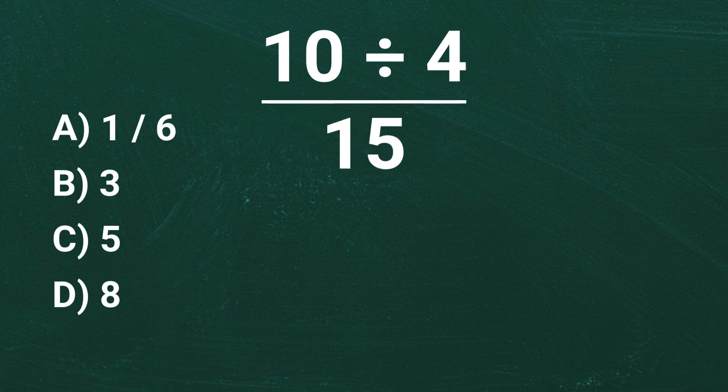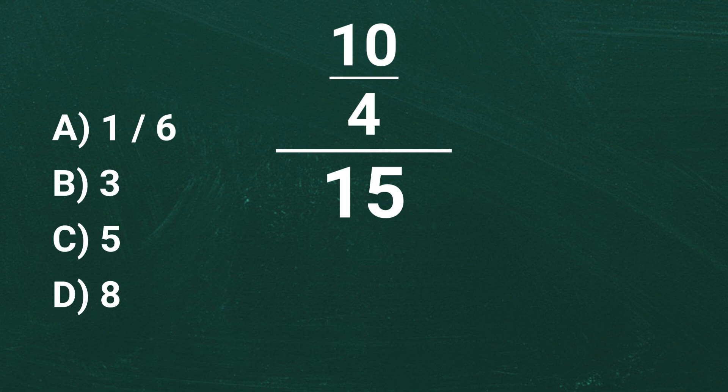Now let's rewrite 10 divided by 4 as a fraction. 10 divided by 4 is the same as writing it as a fraction, 10 over 4. At this point, we are dividing by 15. But remember, dividing by a number is the same as multiplying by its reciprocal.